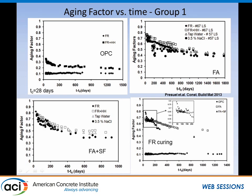For fly ash plus silica fume, there is also a decay, but there is a second plateau around 80 days that lasts about 100 days, followed by continuation. We believe this is due to silica fume initially dominating, with a delay on the fly ash reaction, and then it is dominated by the pozzolanic reaction of the fly ash. Combining results for OPC, fly ash, and fly ash plus silica fume: M for OPC is about 0.1, for fly ash plus silica fume is about 0.4, and for 20% fly ash only is about 0.5.